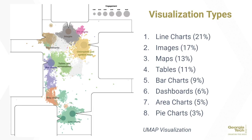Interestingly, the images and dashboard clusters are filled with screenshots of the Johns Hopkins COVID dashboard, along with memes and other images. More importantly, there is a good balance of a variety of chart types, and these are all common types found in the data visualization community.